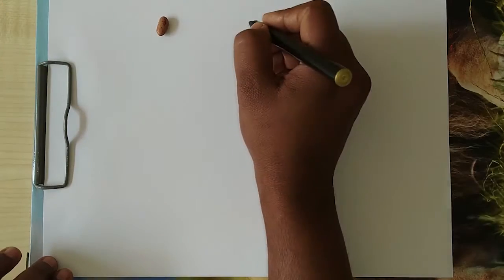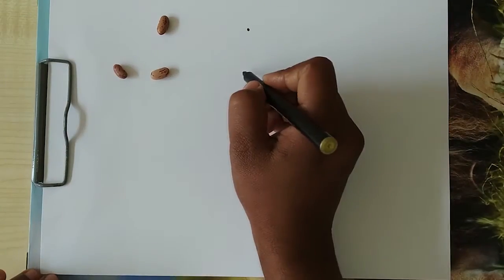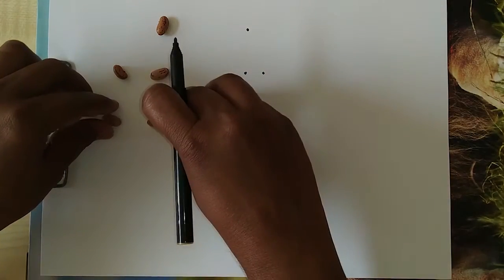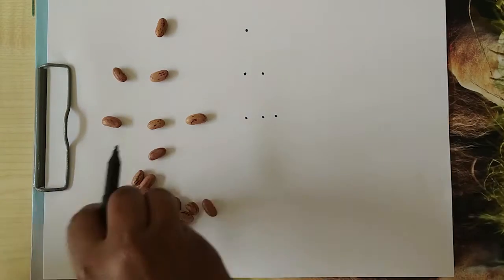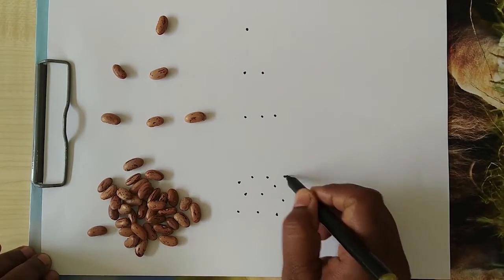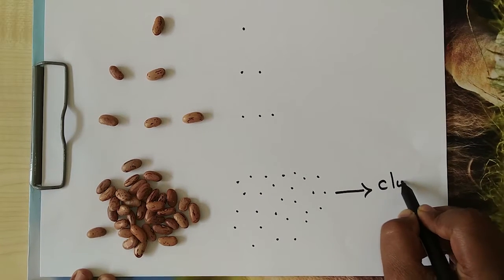So, suppose we are counting beans. One simple method would have been that we put one dot for each bean that is there. There are two beans, we put two dots. This would have been the simplest way of writing and representing numbers in writing. But as you can see, when we have more number of beans, this becomes very clumsy way of writing numbers.